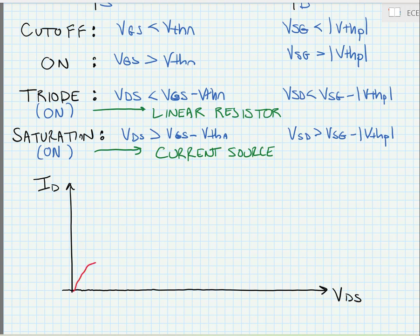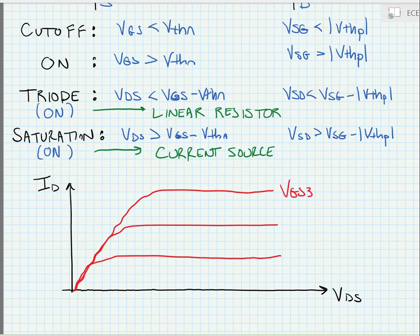Ideally, we would get some DC current values that look like this. For different values of VGS, we would have different currents.